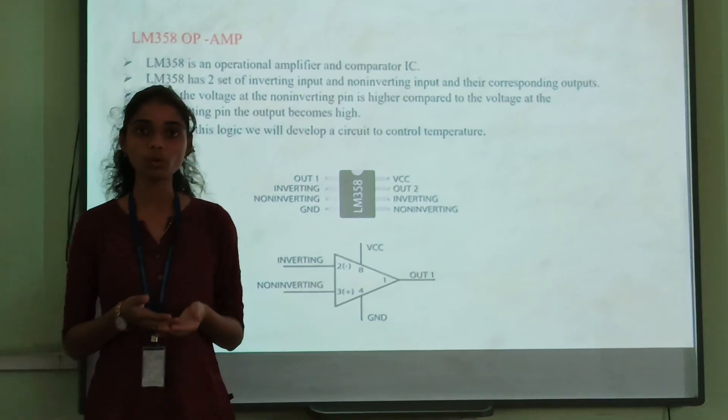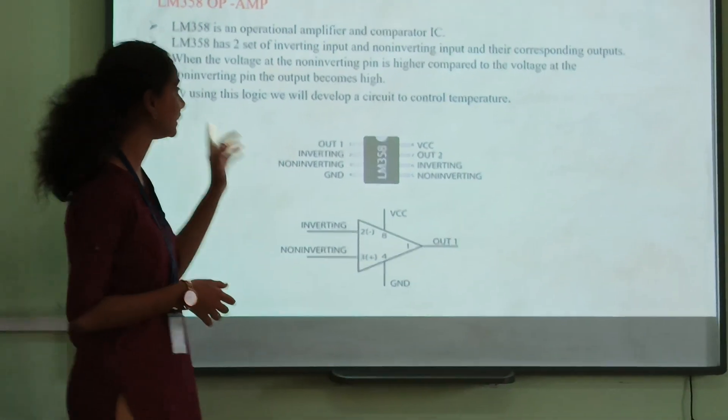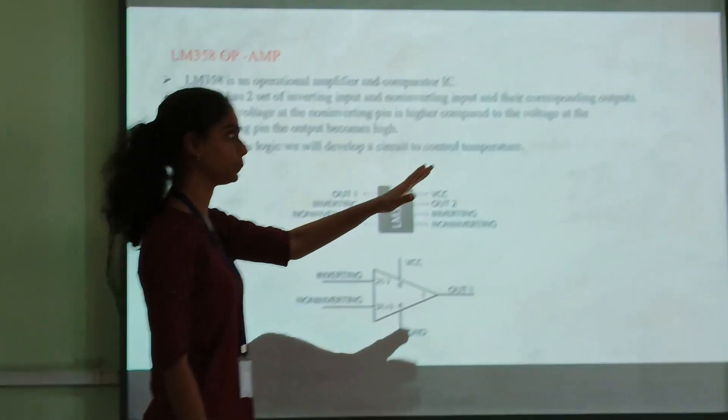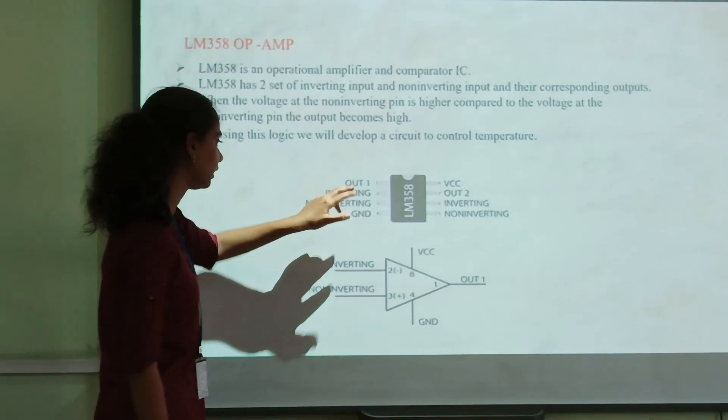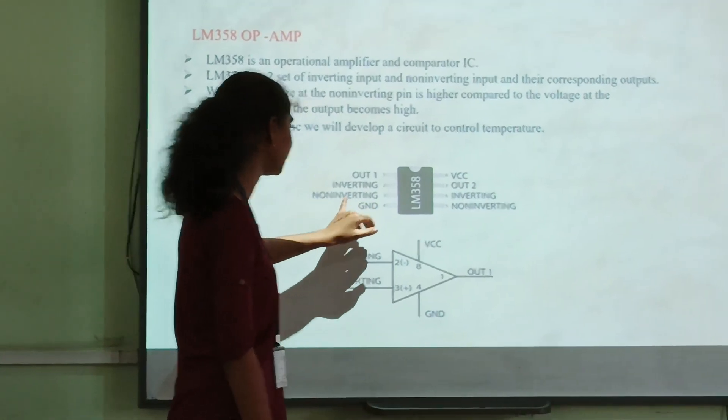In a regular OP-AMP like the LM741, the LM358 is different because it has two sets of inverting inputs and non-inverting inputs. We have the second pin as inverting and the third pin as non-inverting.